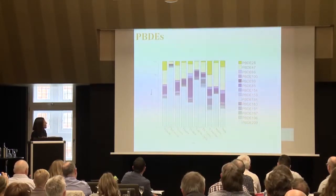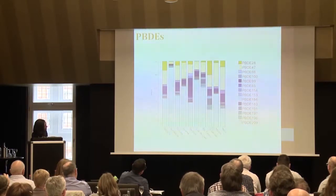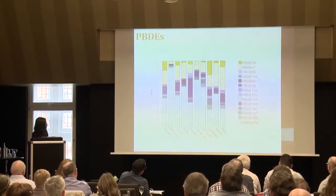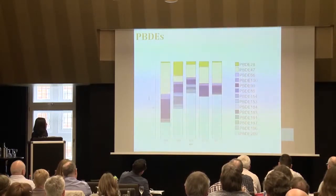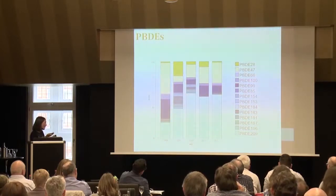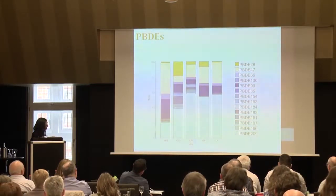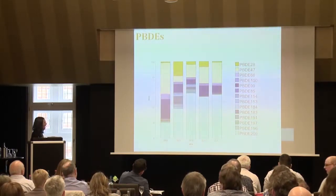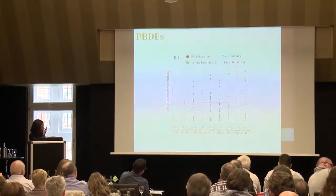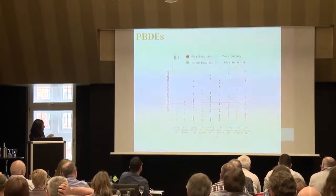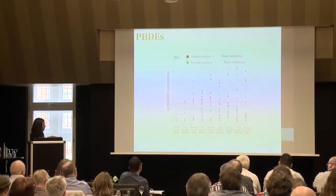Moving to PBDEs, the congener profile shows all the congeners we are analyzing including BDE-209, which is always the dominant congener. It is also notable — though not in a positive sense — that when we move from 2008 to 2012, BDE-209 levels are generally increasing while the low-brominated congeners are decreasing. Looking specifically at BDE-209, levels are generally increasing, especially in remote areas compared to cities.